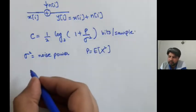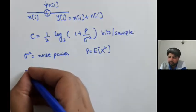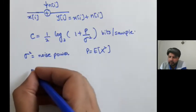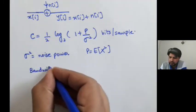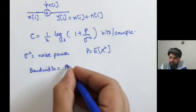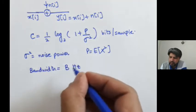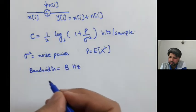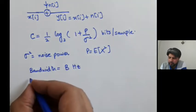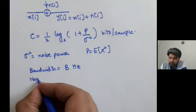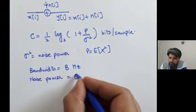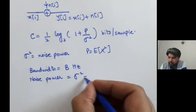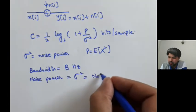And then we said that if we have a band limited channel and the bandwidth is limited to B hertz, and suppose that the noise power, that would be equal to sigma squared, that is equal to N naught B.